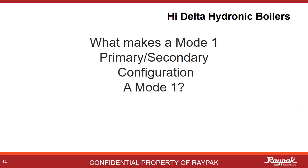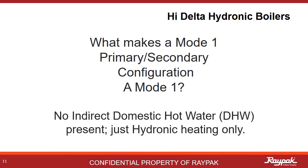So what makes a Mode 1 primary-secondary a Mode 1? It's not what's there, but what's not there. There's no indirect domestic hot water system present — it's just a straight-up hydronic heater.